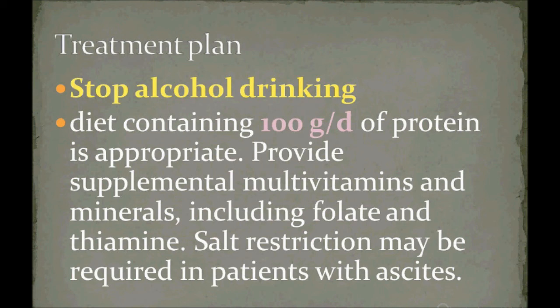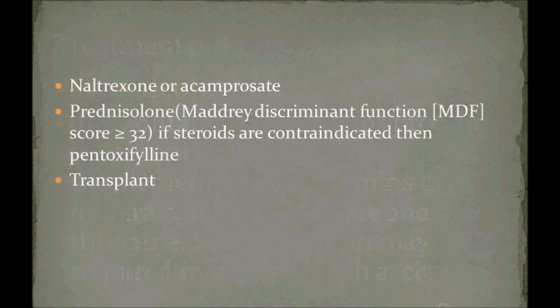The treatment plan starts with advising the patient to stop drinking alcohol. The treatment for alcoholic hepatitis is nutritional rather than primarily pharmacological. A diet containing 100 grams of protein is appropriate, along with multivitamins, folate, thiamine, and salt restriction if the patient has ascitic fluid.